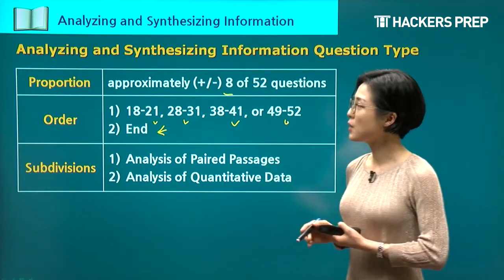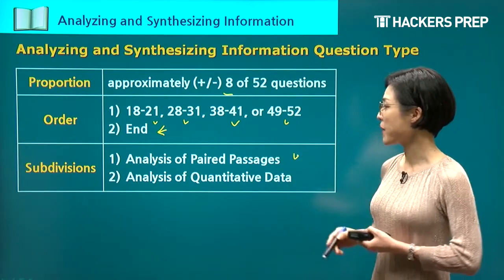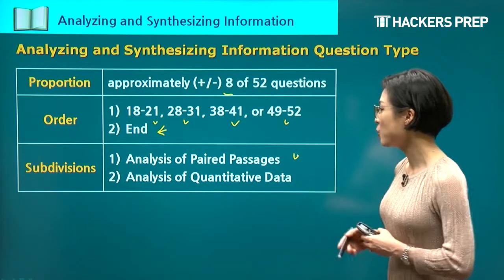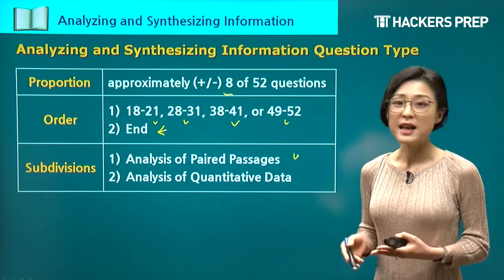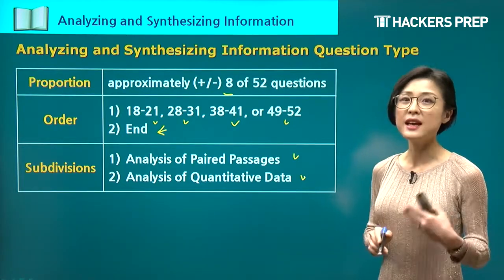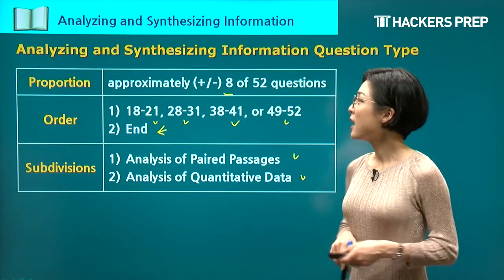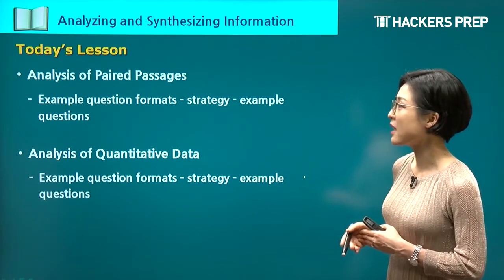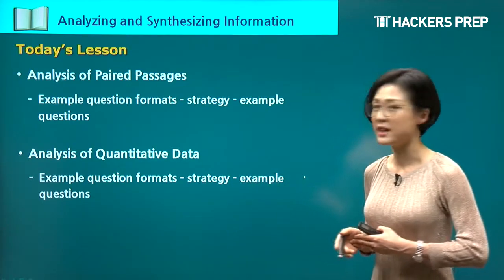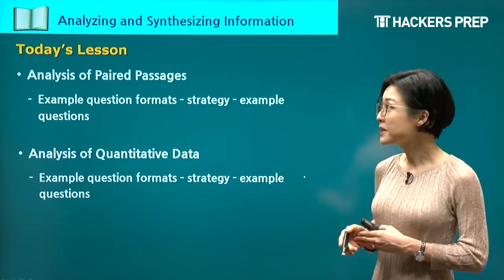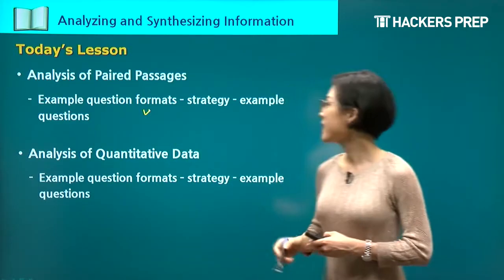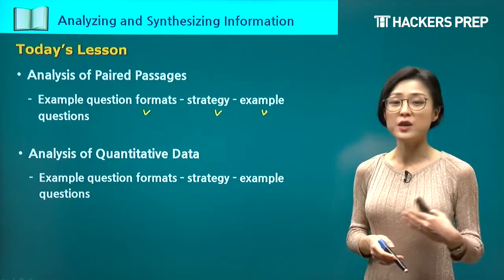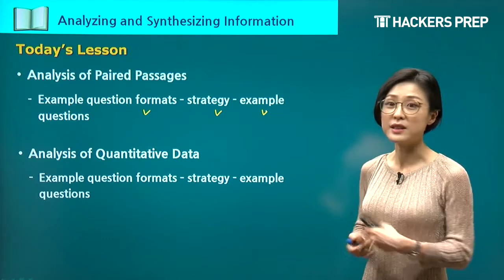We can divide this question type into two subtypes. The first is the analysis of paired passages — two different passages on the same topic. The second is the analysis of quantitative data, where you are offered graphics and asked to analyze and interpret the data in context of the reading passage. Today's lesson covers both subcategories. We will begin with paired passages and finish with quantitative data, reviewing question format examples, a strategy, and then applying the strategy to a reading passage.